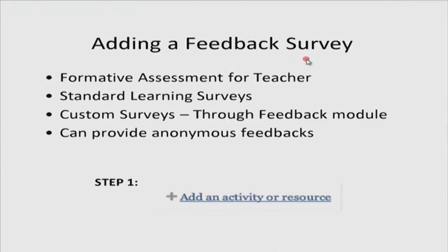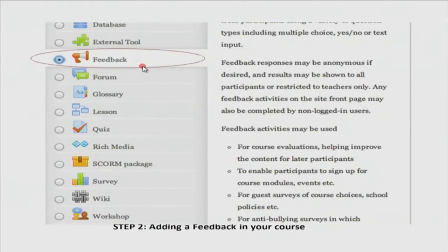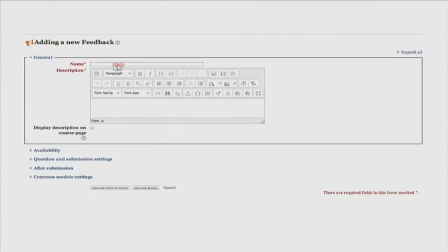Next is the feedback survey. What purpose does a feedback survey serve? As a teacher it provides formative assessment on how the class is going. There are two types: a standard learning survey and custom surveys, done through the feedback module. We have used these as pre-workshop survey and wiki survey — which you saw yesterday. You can set up the feedback module for providing anonymous feedback if students are hesitant. The process is the same — add an activity or resource, select feedback. Options include name, availability, questions and submission settings, and what happens after submission.